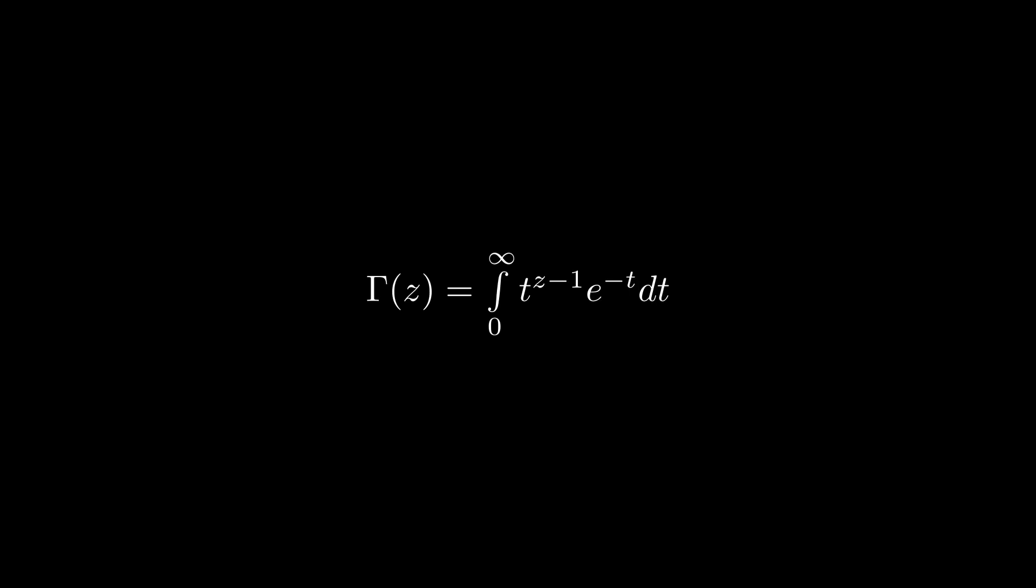The gamma function is defined as the following integral and is commonly known as an extension of the factorial function, where gamma of n is n minus 1 factorial. Another important identity is the value of gamma of half, which is square root of Pi. Keep note of these two properties.